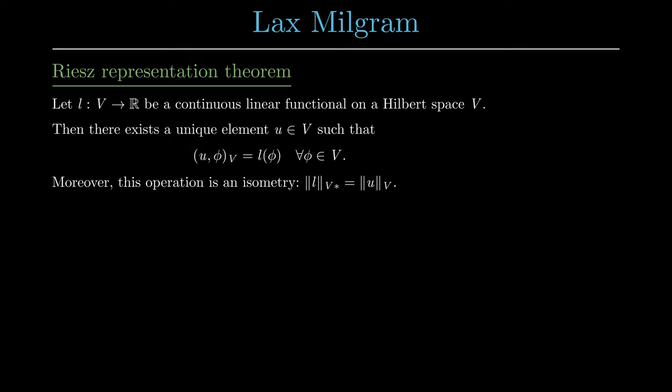Here we use the notation V star to denote the dual space of V, which is the space of all continuous linear functionals from V into the real numbers.